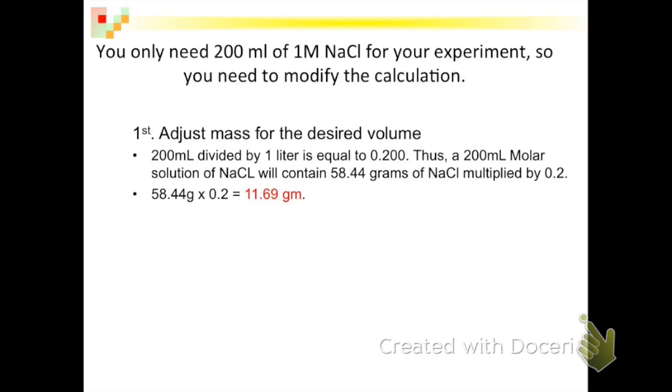Instead of a full 58.44 grams of sodium chloride, we only need a fifth of that, since 200 milliliters is a fifth of a liter. In the math we're going to write out, our step is to adjust the mass for the desired volume. We see that 200 milliliters divided by 1 liter is equal to 0.200.